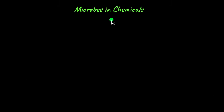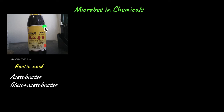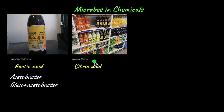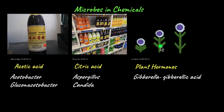Finally, microbes in the chemical industry. Acetic acid, or vinegar, is commonly produced using Acetobacter and Gluconoacetobacter, and is mainly used in cooking. Citric acid, a common component of juices like Fanta or Sprite, is produced using Aspergillus and Candida species. Plant hormones are also produced using microbes — for example, Gibberella species of fungus produces gibberellic acid, a plant hormone that causes stem elongation and growth in plants. The gibberellic acid is extracted and sprayed over plants to increase their growth. These are some examples of beneficial microorganisms used in different industries to produce products useful to us.